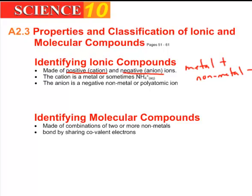Sometimes the cation can be something like ammonia. The anion is negative and it's a non-metal, or it could be one of those polyatomic ions that you see on your polyatomic chart.